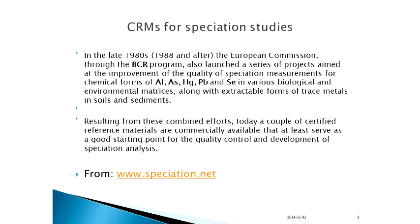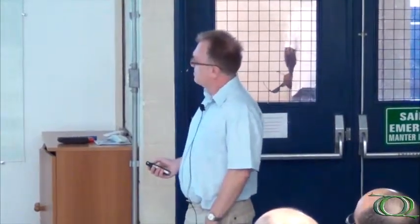The importance of certified reference materials for speciation studies was highlighted in the 1980s and in 1988, later by the European Commission, who launched a series of projects leading to improvement of quality in speciation measurements for chemical forms of heavy metals. Examples include aluminum, arsenic, mercury, lead, and selenium. These projects led to the establishment of reference materials in various biological and environmental matrices, along with extractable forms of these metals and non-metals in soils and sediments.